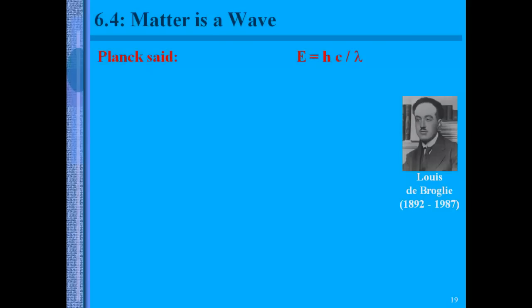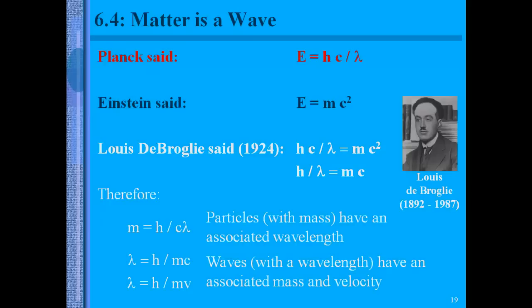Matter is a wave. Planck said that energy, we can use that and it can be determined by the speed of light in the wavelength. Einstein said that energy will equal the mass times the speed of light squared. And de Broglie said that if both of these scientists were correct, then we can have both equations equal each other. And we can simplify it down. Therefore, if the particles have a mass, then they have an associated wavelength. We are also able to say that the waves with a wavelength have an associated mass and velocity. So any wave will have a mass and velocity to it as well.